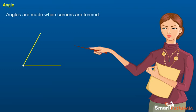The two rays forming the angle are called the arms or sides of the angle. The common end point is the vertex of the angle.